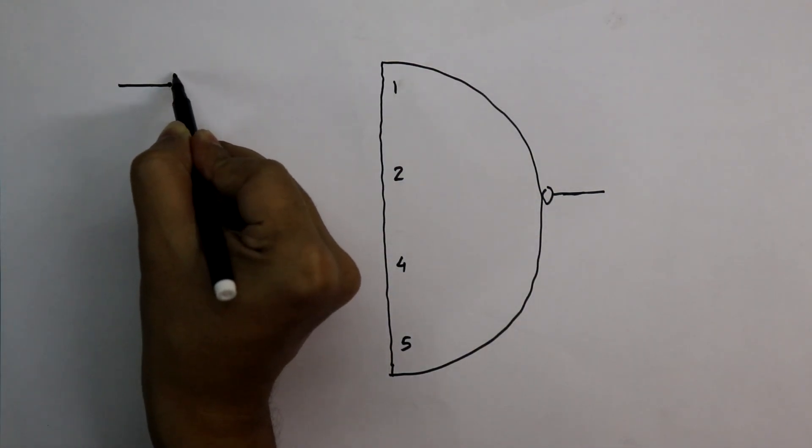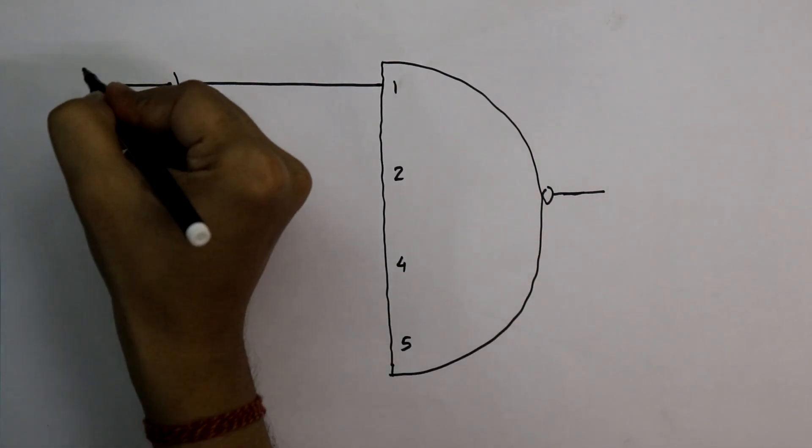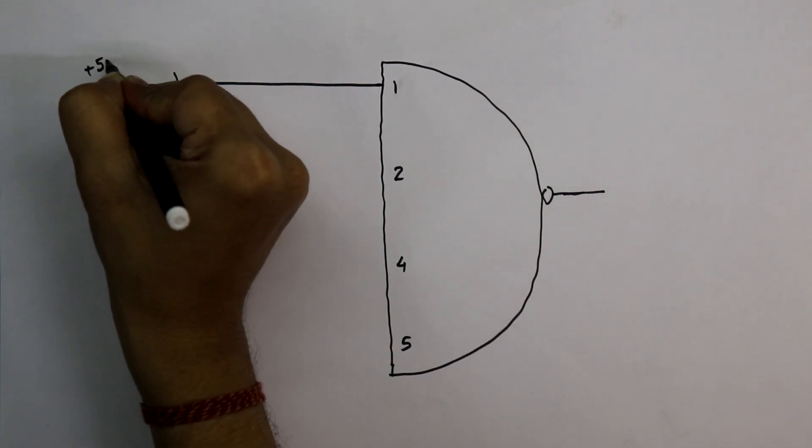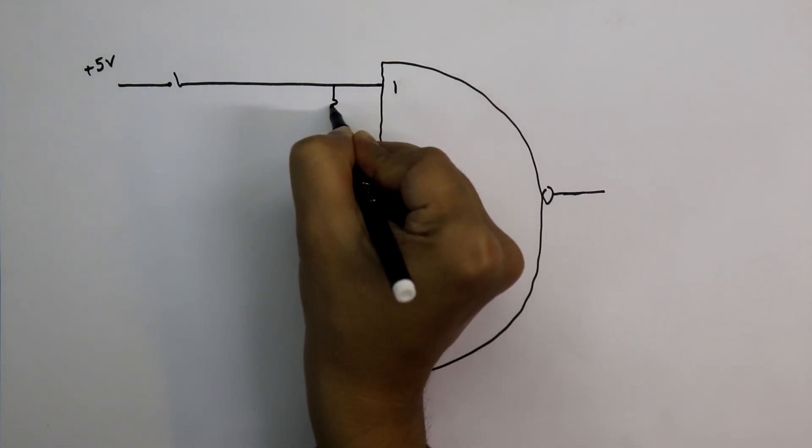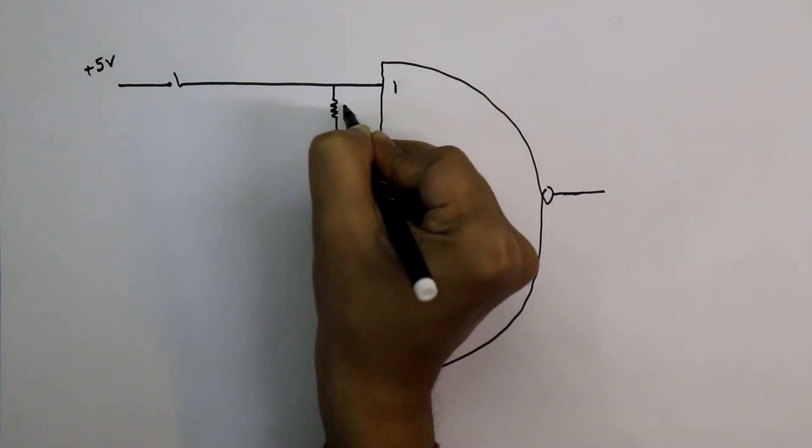To provide input, we will use a switch. The other pin of the switch is connected to the plus 5 volt. This IC is digital IC, so we have to connect a pull down resistor with its input pin.